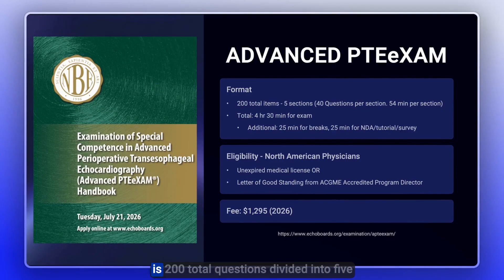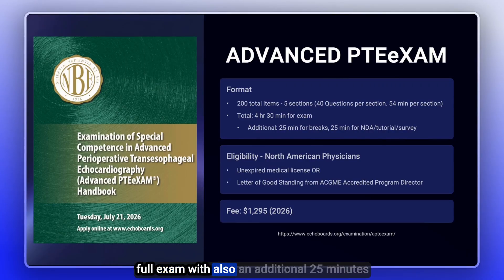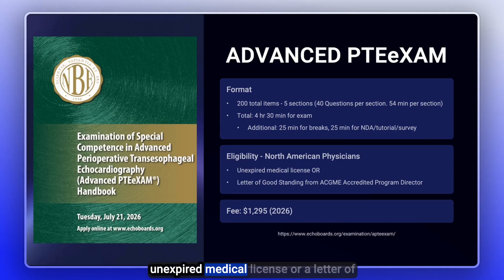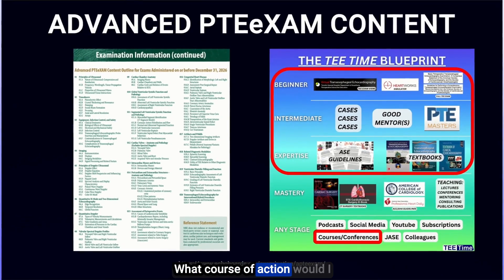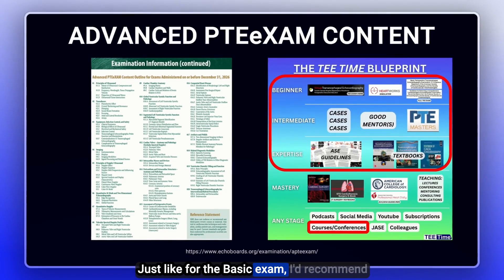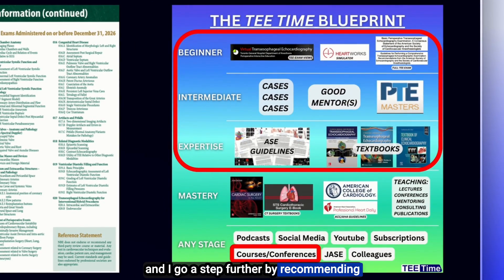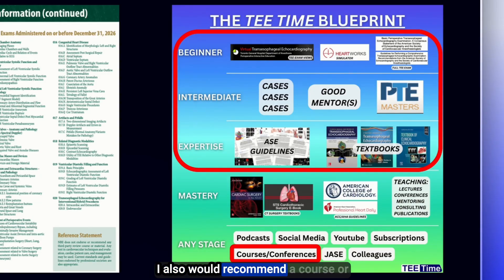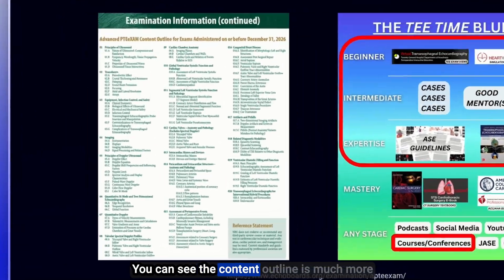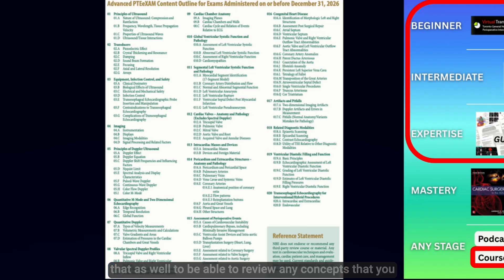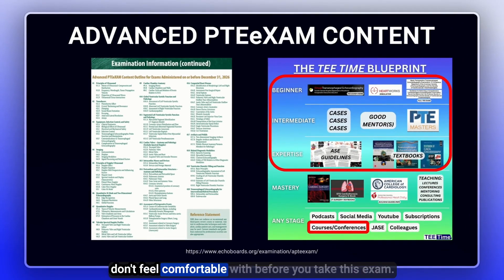For the advanced TEE exam, it's 200 total questions divided into five sections of 40 questions each. You'll have four and a half hours to take the full exam with an additional 25 minutes for breaks. Eligibility requires an unexpired medical license or a letter of good standing from your program director, and it costs just under $1,300 in 2026. I'd recommend completing the beginner, intermediate, and expertise sections of the blueprint — get a textbook, go through the ASE guidelines, attend a course or conference, and carefully review the content outline, which is much more extensive for this exam.